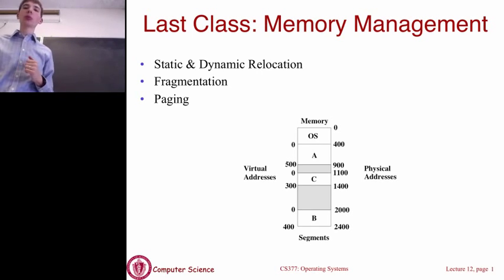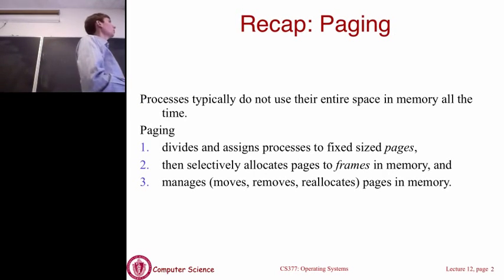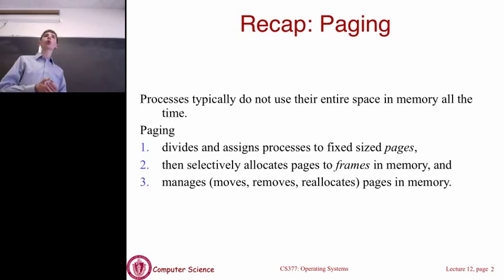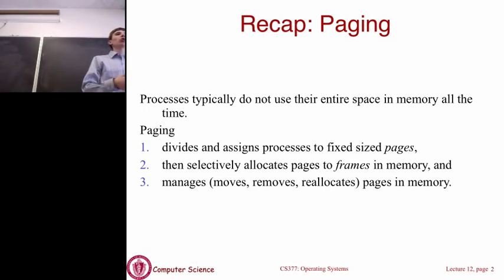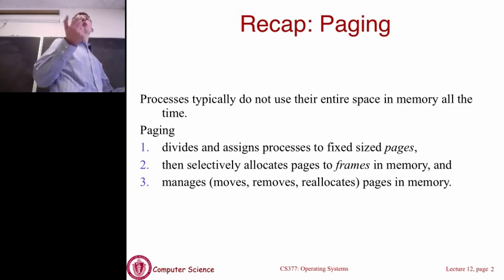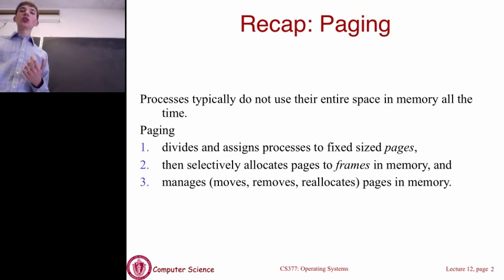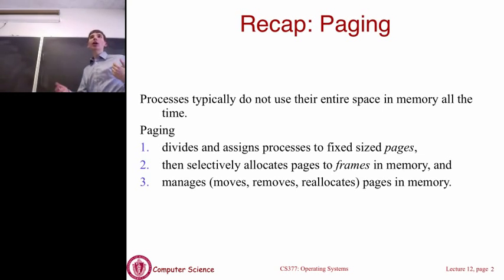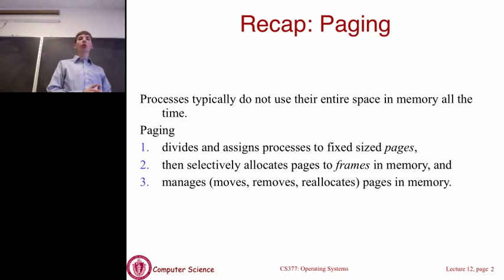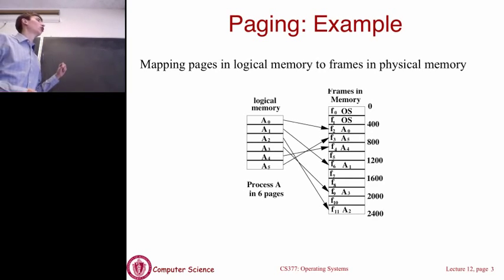Before we move on, let's recap the basic idea of paging. Remember the 90-10 rule: on average, a process is typically only using the same 10% of its memory space 90% of the time. So we don't need to have everything all at once. We're going to use paging to take a process's memory and, rather than allocating it as a contiguous chunk, split it into fixed-size pages. Then we allocate those pages to frames and manage them.